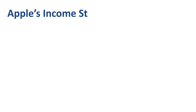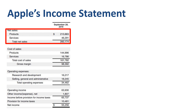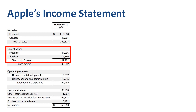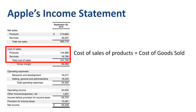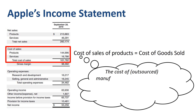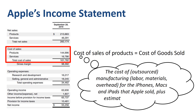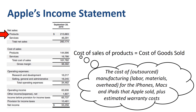Apple's income statement shows net sales of $260 billion at the top and net income of $55 billion at the bottom. Within Cost of Sales there are two line items: Cost of Sales of Products and Cost of Sales of Services. Cost of Sales of Products is the same thing as Cost of Goods Sold — the cost of manufacturing labor, materials, and overhead for iPhones, Macs, iPads, and other physical products Apple sold during the year, plus their estimated warranty costs.